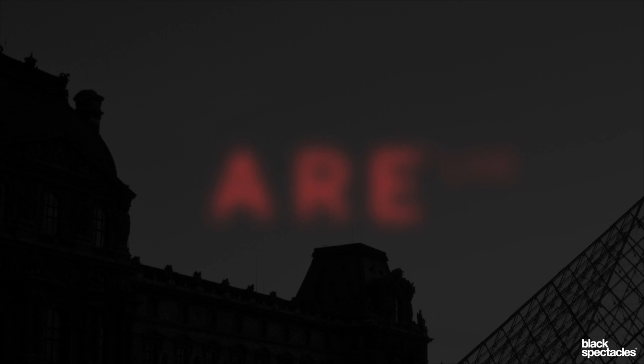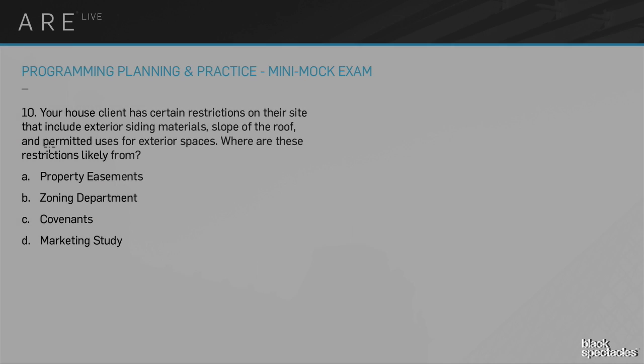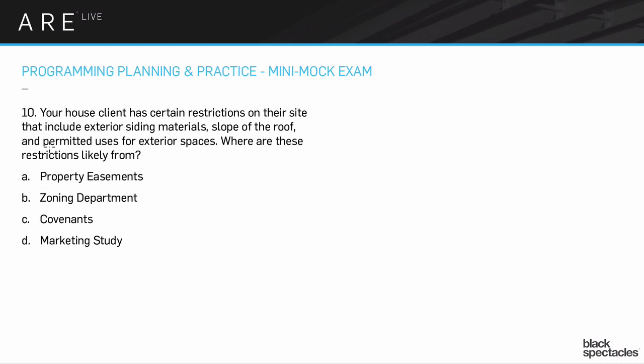Number 10. Your house client has certain restrictions on their site that include exterior siding materials, slope of the roof, and permitted uses for exterior spaces. Where are these restrictions likely from?